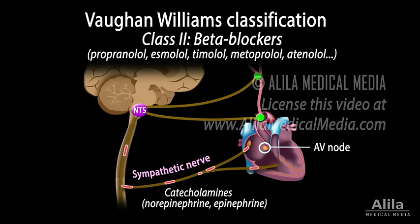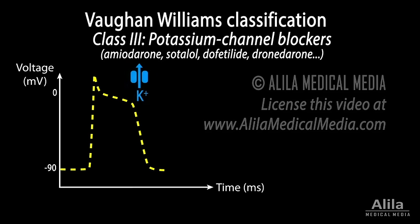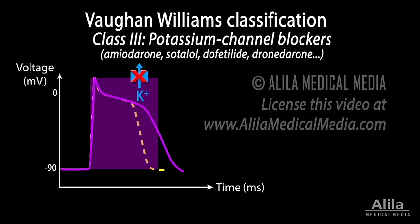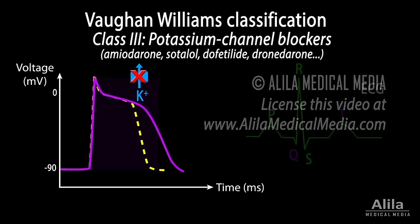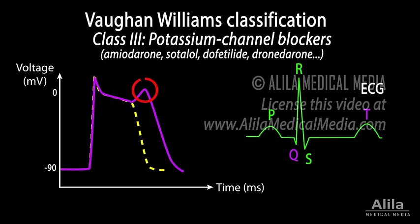Note should be taken, however, that beta blocker treatment may cause AV blocks. Class 3: potassium channel blockers. These agents block the potassium channels responsible for the repolarizing phase. The result is a slowed repolarization, hence a prolonged duration of action potentials and refractory period. This reduces the heart's excitability and suppresses reentrant tachycardias. However, these drugs may also cause arrhythmias because slow repolarizations are associated with longer QT intervals and increased risk of torsade de pointes.